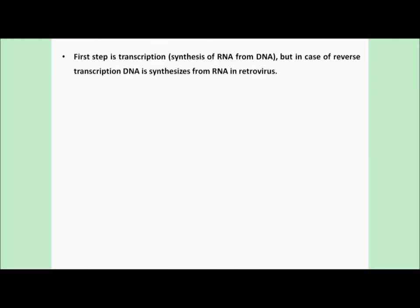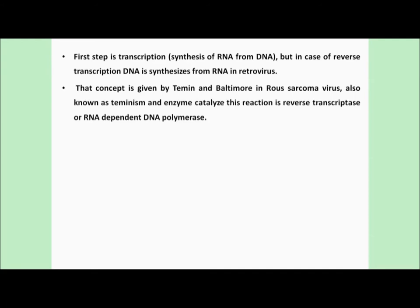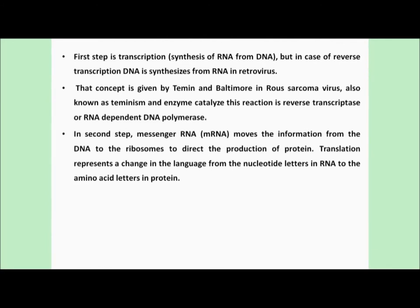The first step of transcription is the synthesis of RNA from DNA. However, in the case of reverse transcription, DNA is synthesized from RNA — for example in retroviruses like HIV. This concept was given by two scientists, Temin and Baltimore, in the sarcoma virus, and is also known as Teminism. The enzyme which catalyzes this reaction is reverse transcriptase, also known as RNA-dependent DNA polymerase, and it is used in the molecular biology tool known as PCR.